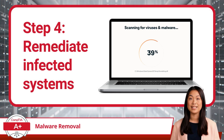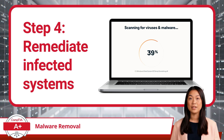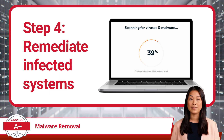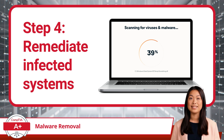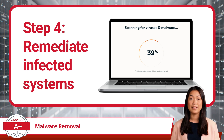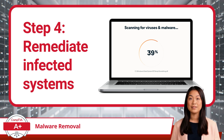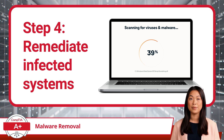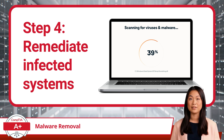With system restore disabled, it's time to remediate the infected system. Start by ensuring that your anti-malware software and definitions are up to date. Once ready, run a thorough system scan to locate and remove any threats. During this step, it can be helpful to review event logs for any suspicious activity or clues about how the malware has been behaving. For particularly stubborn infections, booting into safe mode can give you an advantage, as safe mode only loads essential services, disabling most malware and making it easier to find and remove.